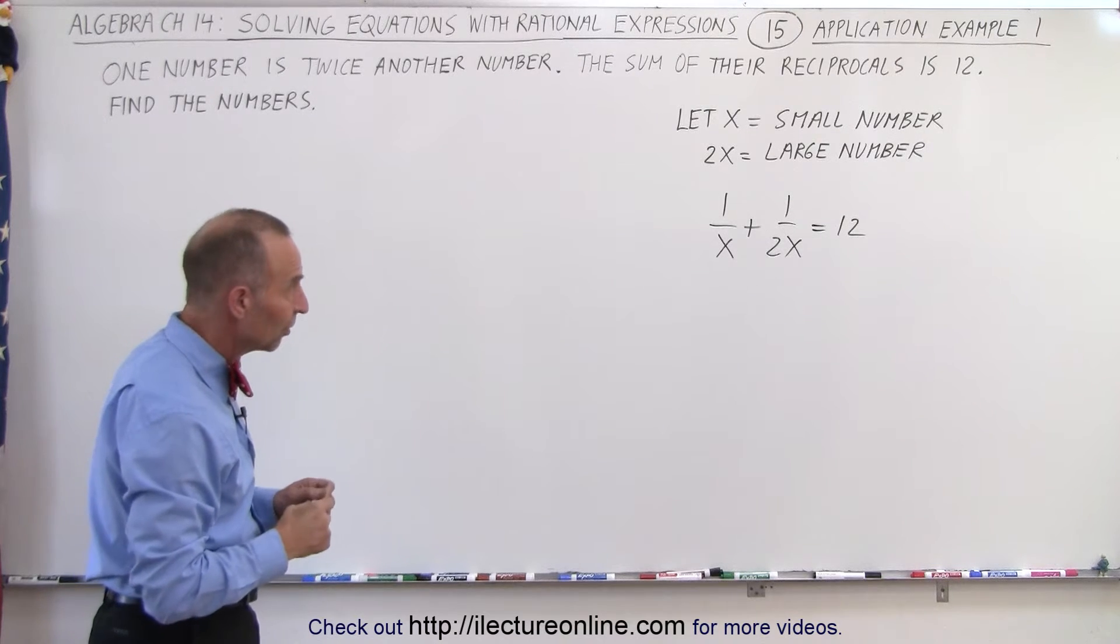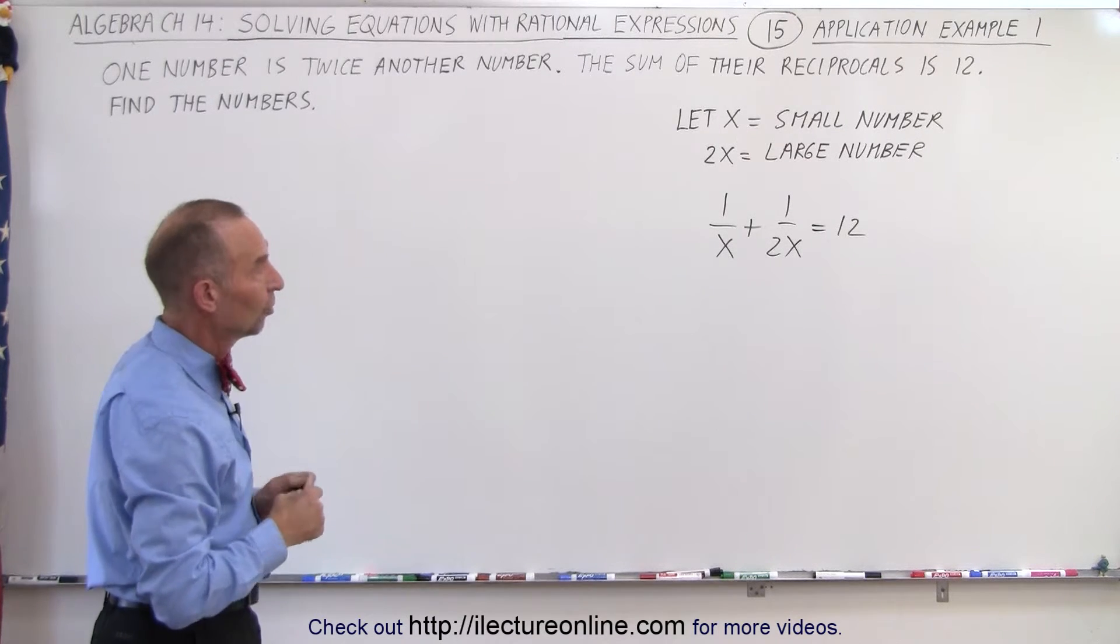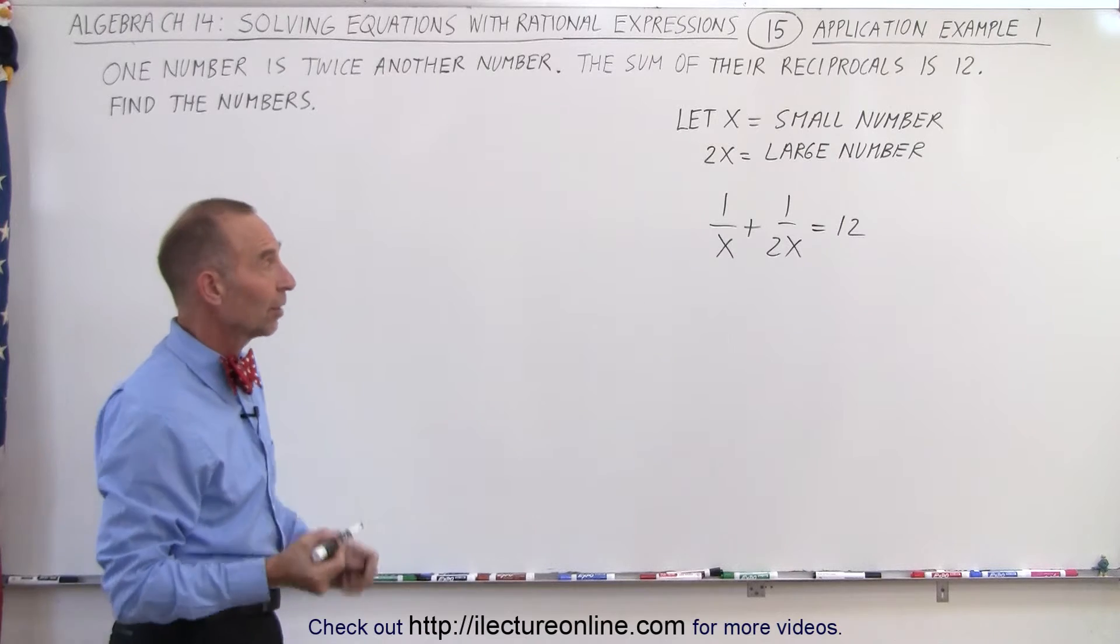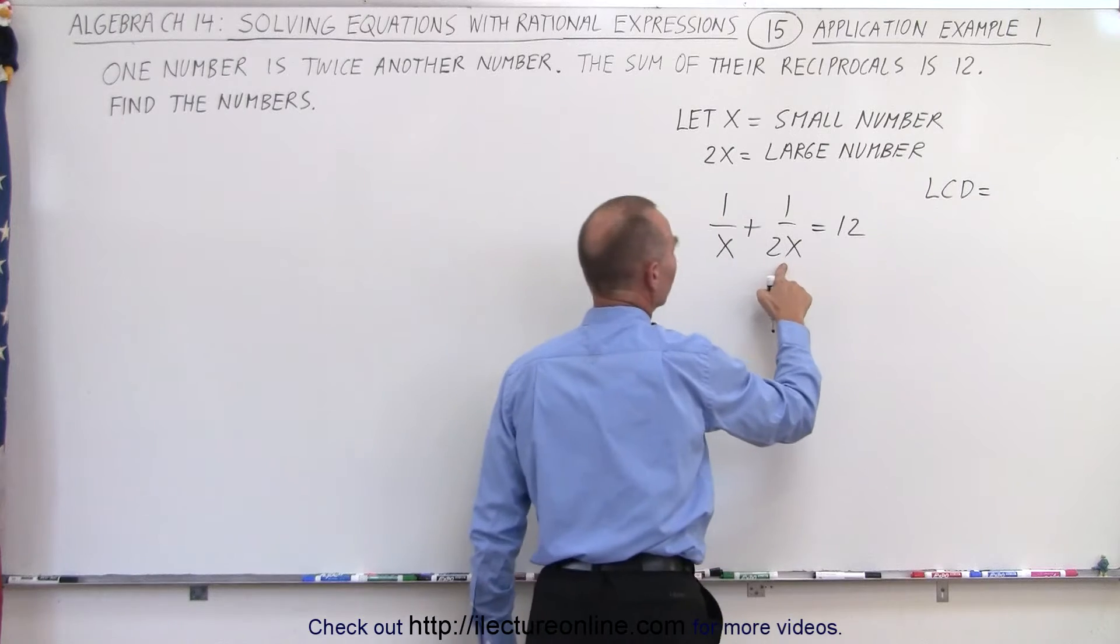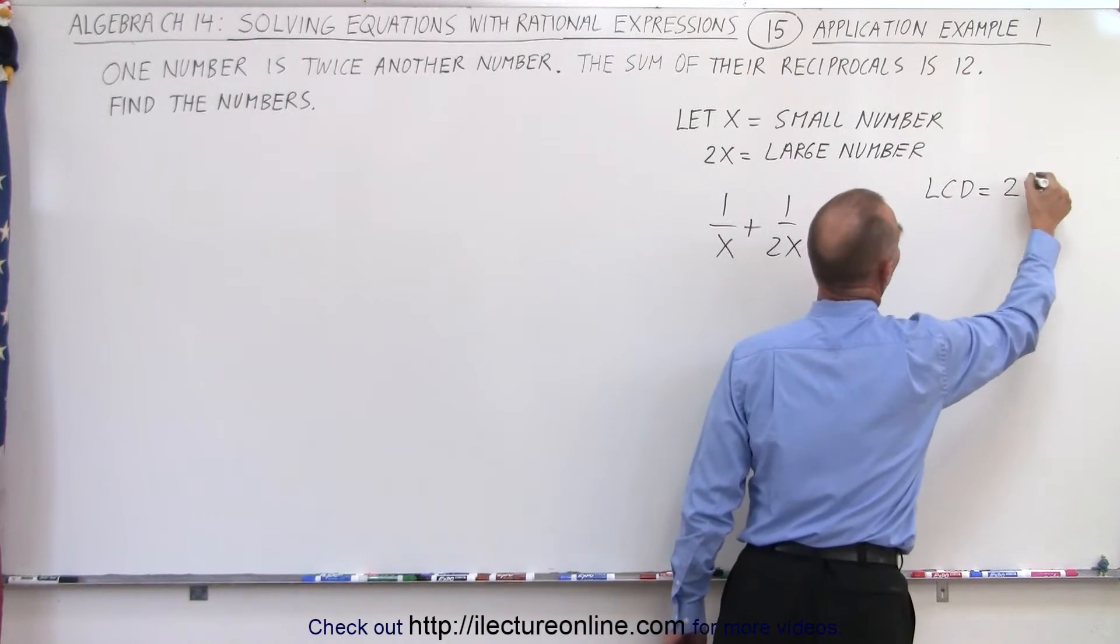An equation with rational expressions. So the first thing we'll want to do is find the lowest common denominator. And in this case, the LCD is going to be the largest of the two denominators, which is 2x.